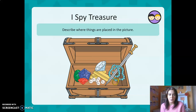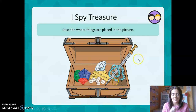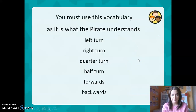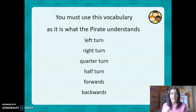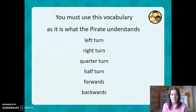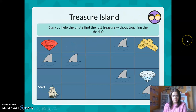I spy treasure! Oh, look at his treasure box — he's got diamonds, pearls, a gold bar, a beautiful ring, and a sword. You must use this vocabulary as it is what the pirate understands. We have to be able to say: left turn, right turn, quarter turn, half turn, forwards, and backwards. This is the language we're going to use to help the pirate.